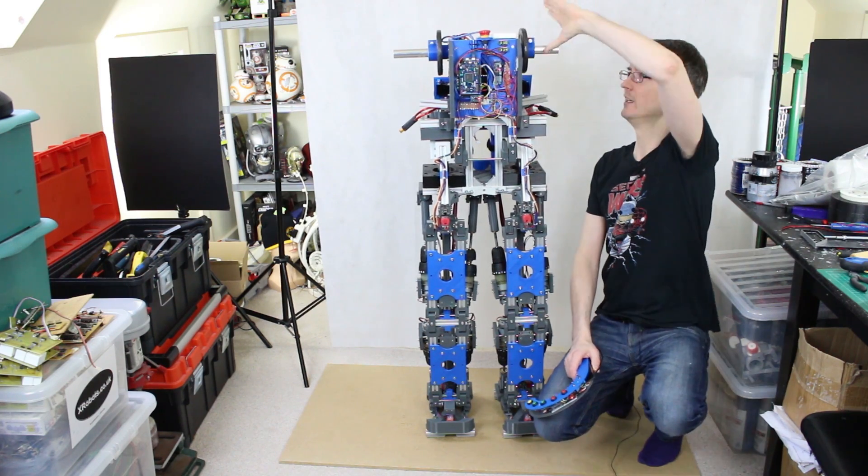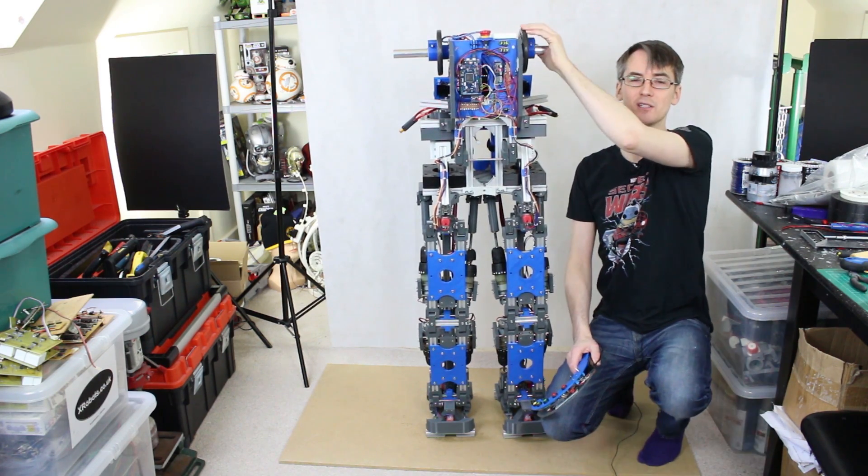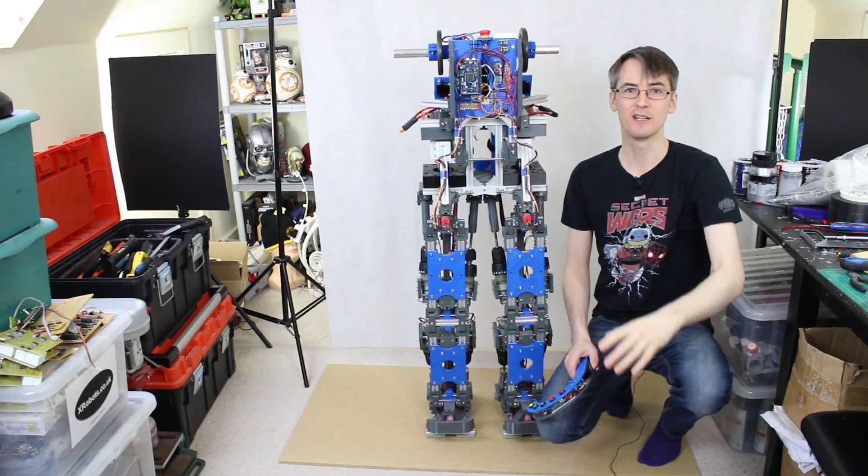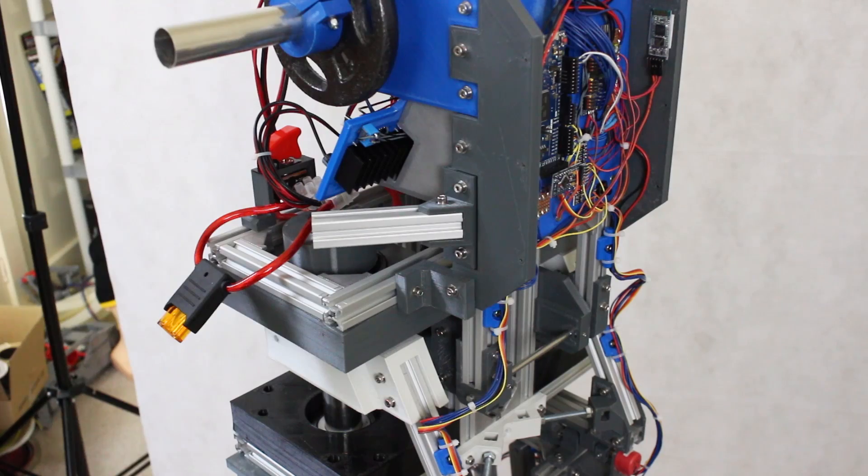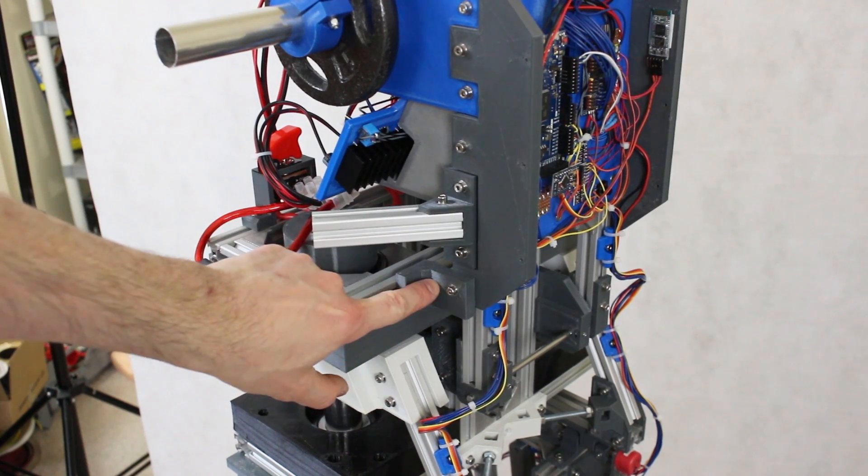So the first thing I'm going to do is put in the front to back stability with an actuator that pushes this body backwards and forwards. And you can see I've got my barbell weights back on here again. We can increase that mass as we need to. So at the moment the front to back axis of the body is locked with these brackets.